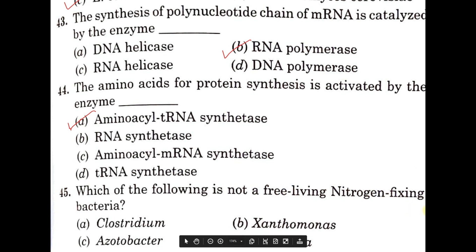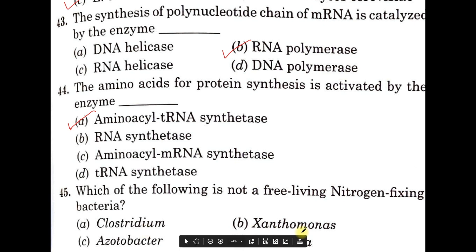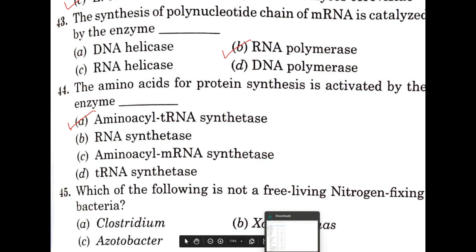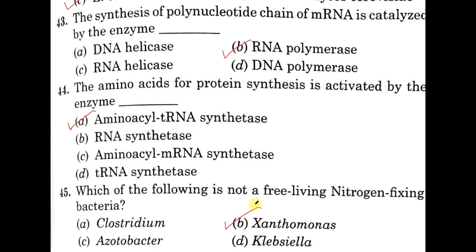Question number 45. Which of the following is not a free-living nitrogen-fixing bacteria? A: Clostridium, B: Xanthomonas, C: Azotobacter, D: Frankia. All are free-living except B, Xanthomonas. Xanthomonas, like Rhizobium, is a symbiotic bacteria. So option B, Xanthomonas, is the correct answer.